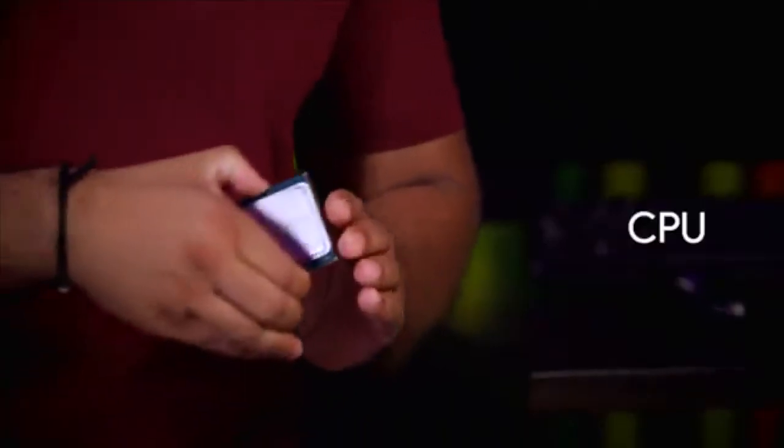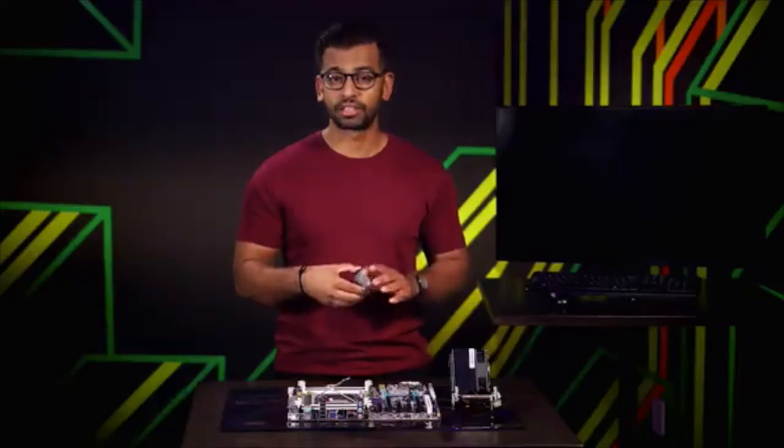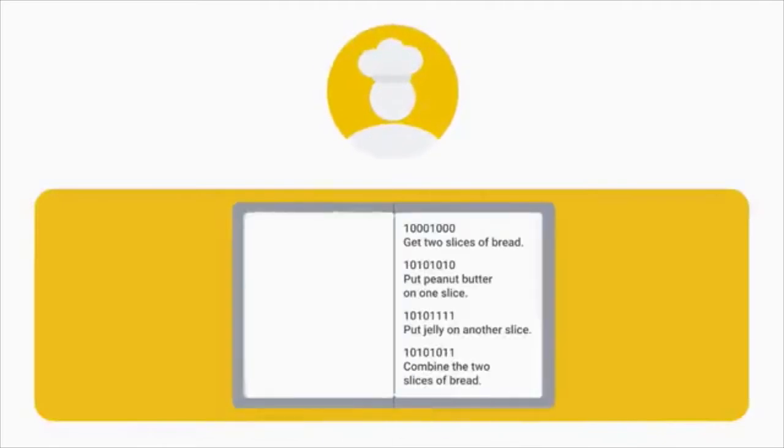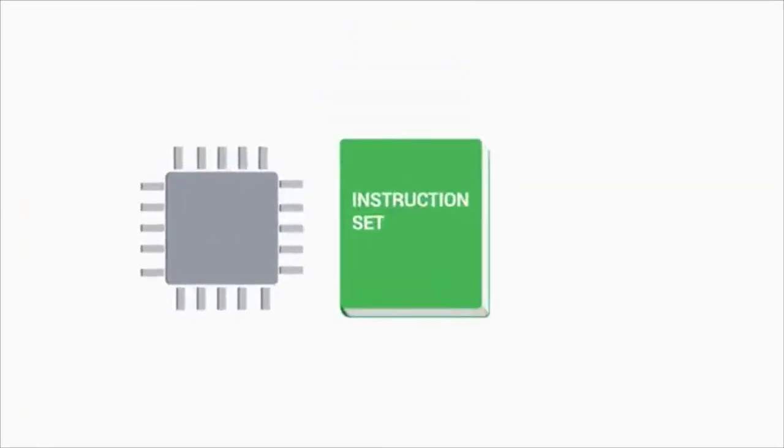If someone asked you to calculate the square root of 5,439,493, you'd probably use a calculator. There's actually a very powerful calculator right inside of your computer that processes binary for us — it's our CPU, the brain of our computer. The CPU uses a translation book called an instruction set, which is literally just a list of instructions that our CPU is able to run.